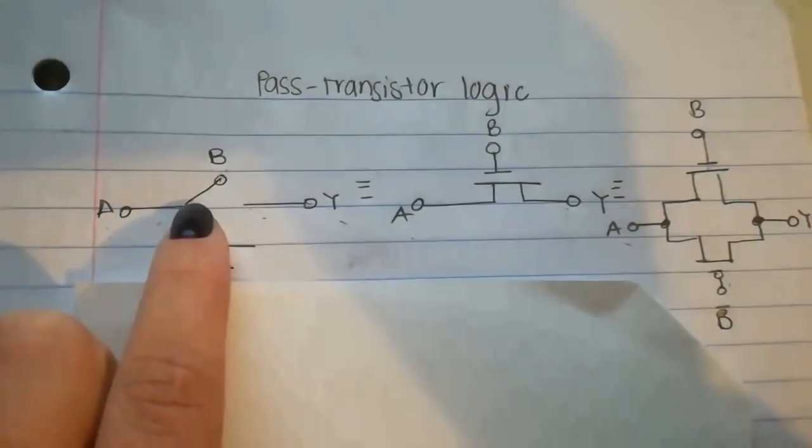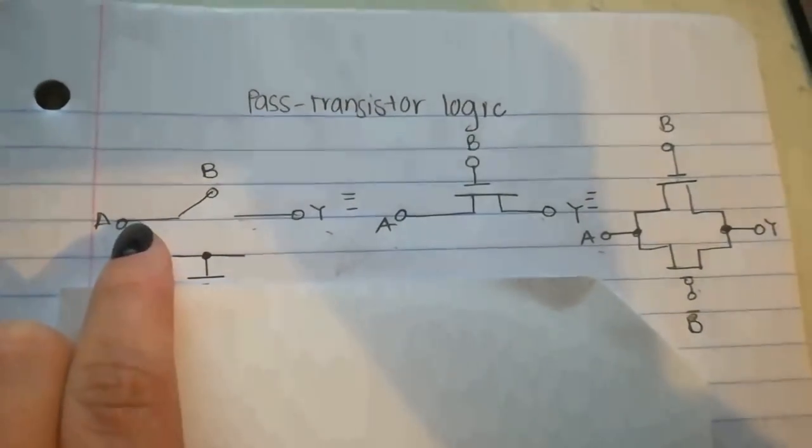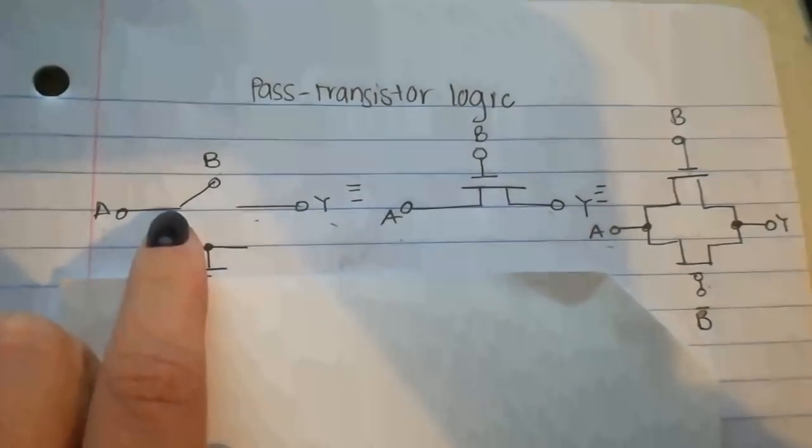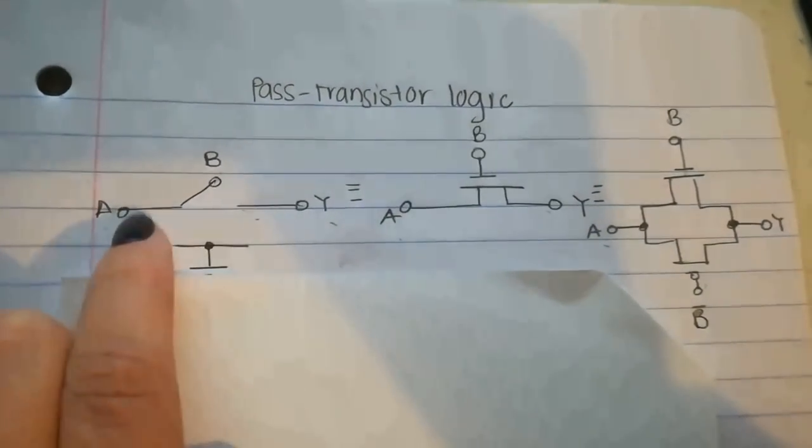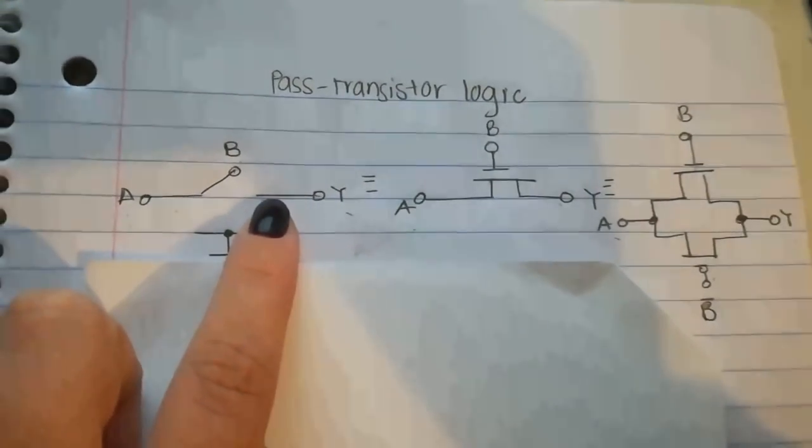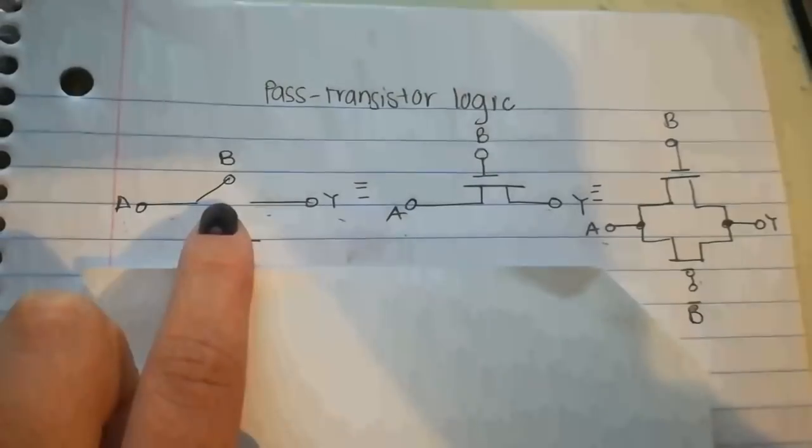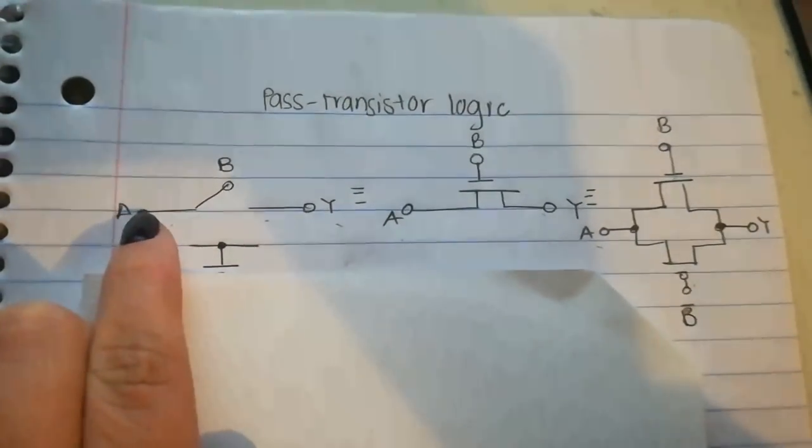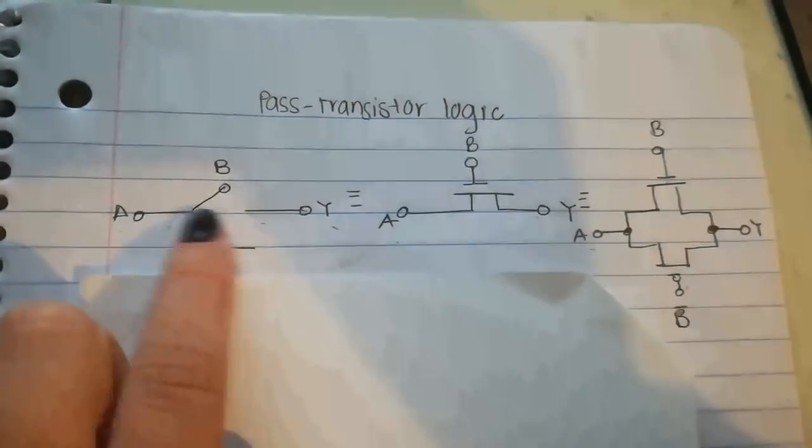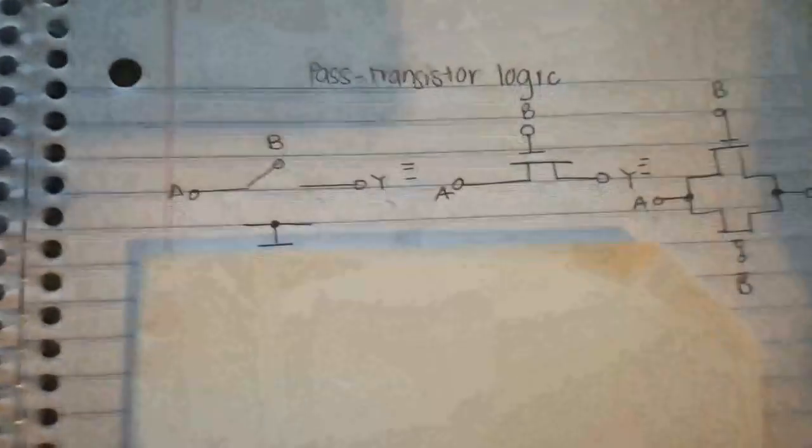If B is down, so it's on, that means it's passing a logic one. Then the output Y would depend on the value of A. So if B equals 1 and A equals 0, Y would be 0. But if B equals 0, it doesn't matter the value of A, Y is still gonna be 0.